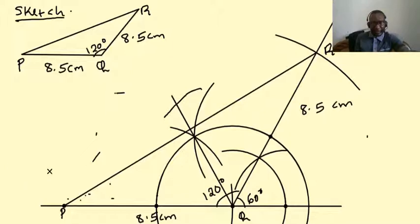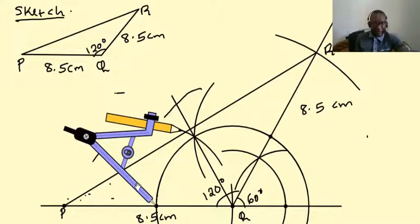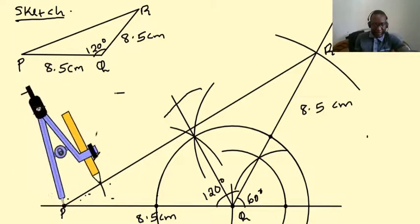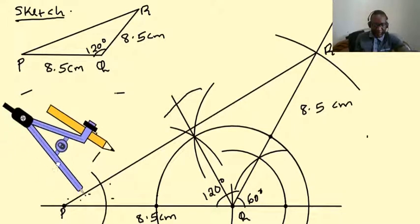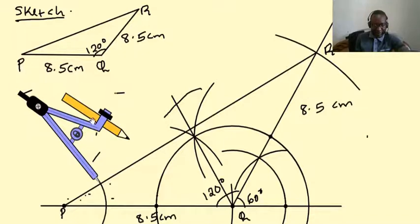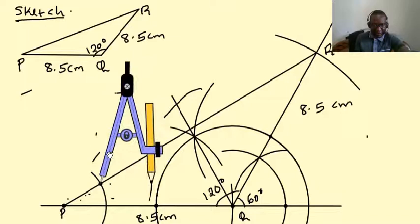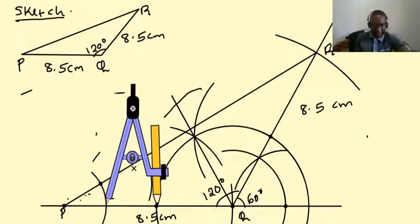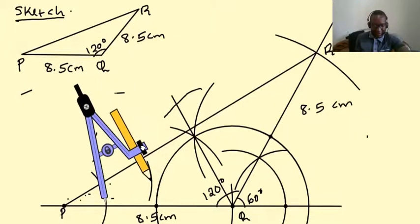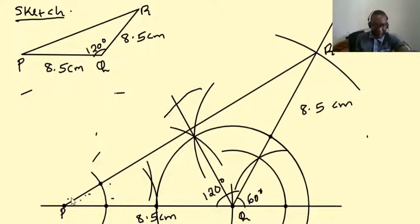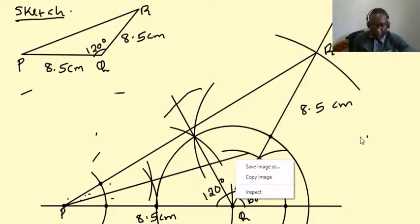Next, we need to bisect angle P. We get our compass back, bisecting angle P, draw that arc. So we can use these two arcs here to draw other two arcs inside here which intersect. Without adjusting your compass, you shift it to that point, you can draw that arc there. Now we get a ruler and join.